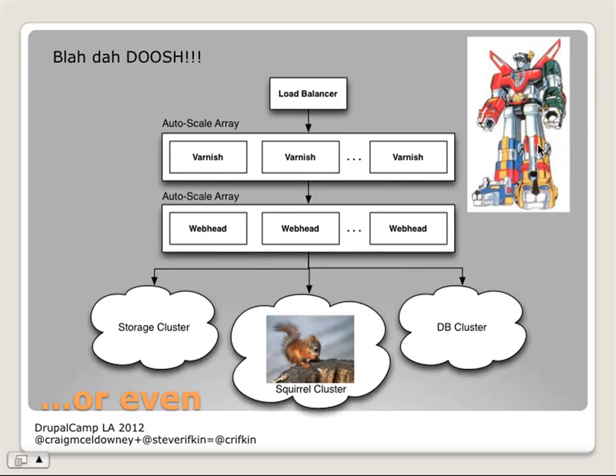If you kind of abstract things out into server roles, you can see how you can define your configuration for each portion of your infrastructure in a really easy and replicable way. And using Chef, everything can find its place in the infrastructure and all the other servers become aware of it.